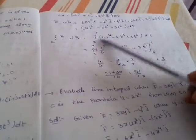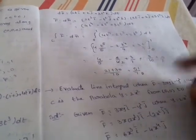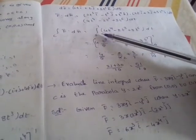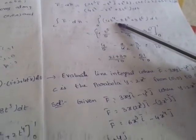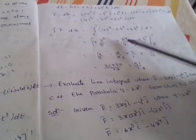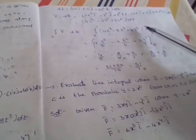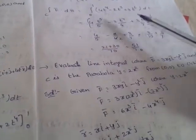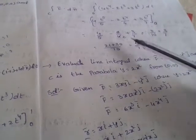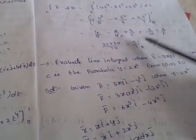The line integral from t=0 to t=1 gives: integral of 4t⁴ dt − integral of 2t³ dt + integral of 3t⁶ dt = [4·(t⁵/5)] − [2·(t⁴/4)] + [3·(t⁷/7)] from 0 to 1 = 4/5 − 1/2 + 3/7. Simplifying with LCM 70: (56 − 35 + 30)/70 = 51/70. The answer is 51/70.